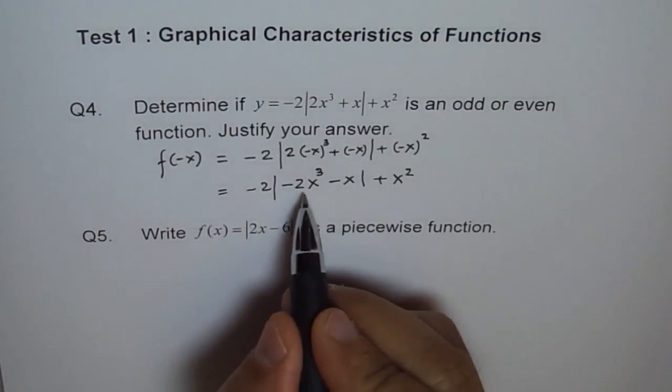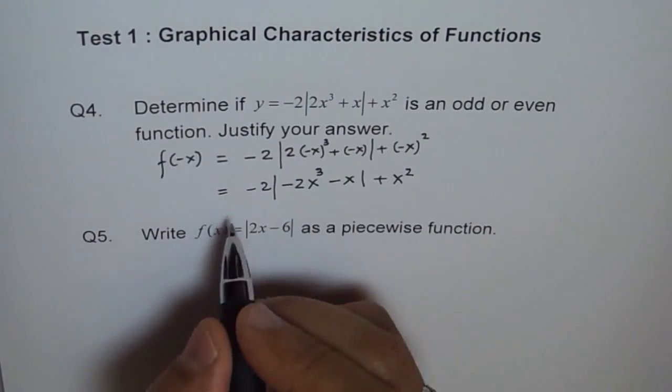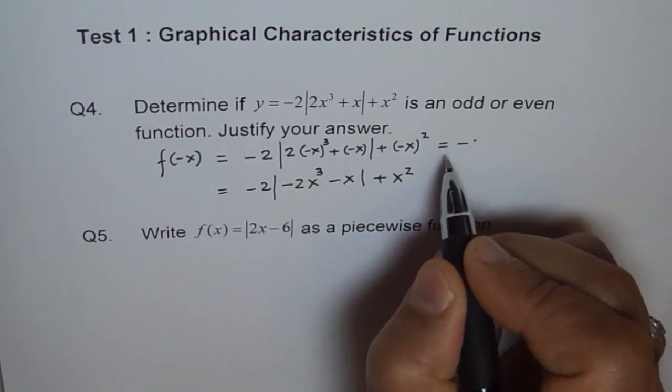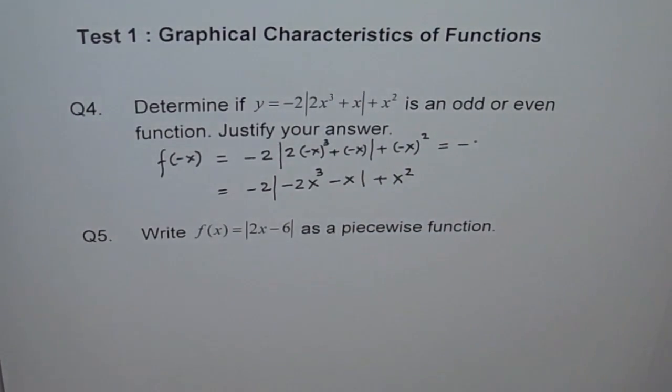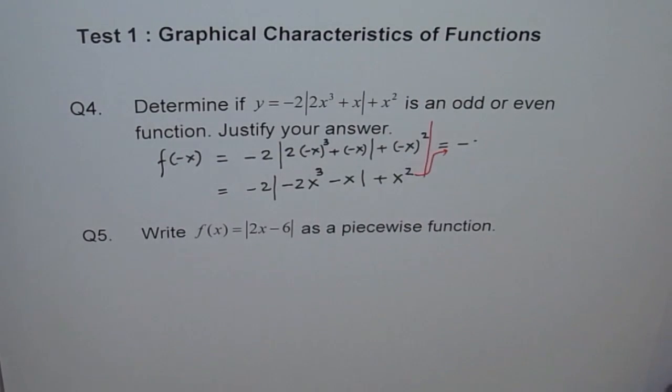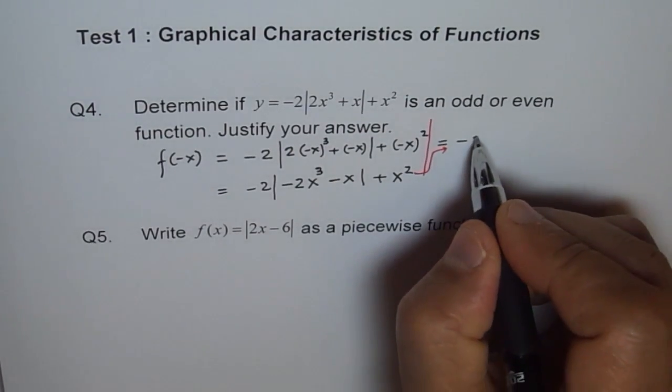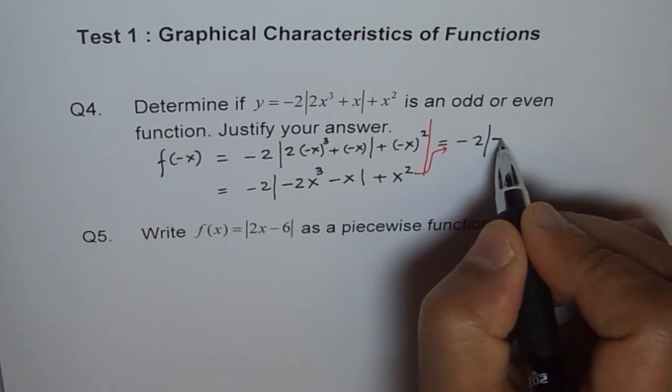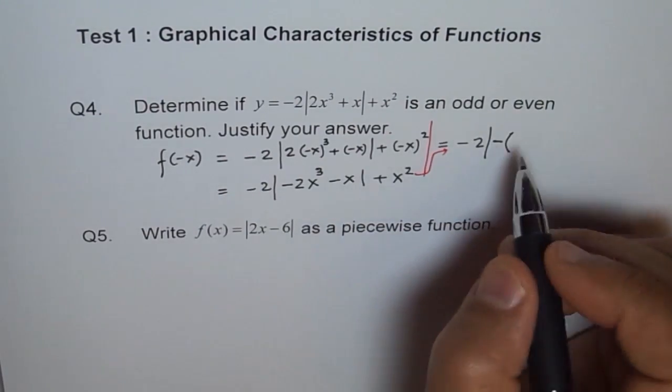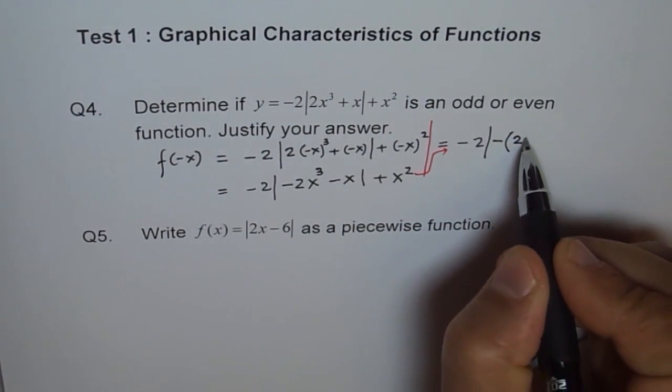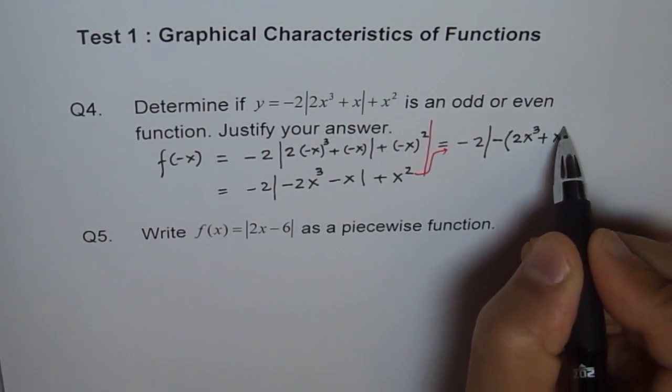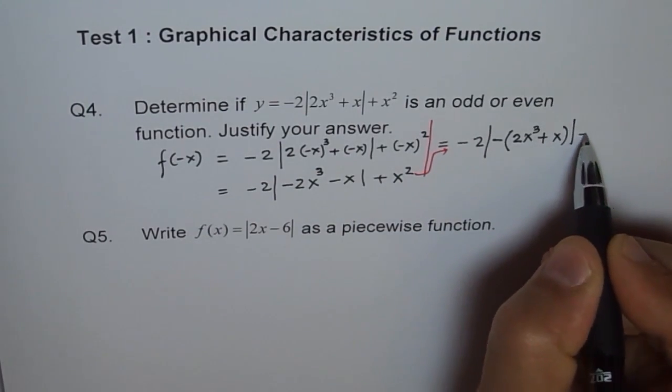Now what we can do is, we can take this minus common. If I do that, what do I get? I get -2 times the absolute value—So I am moving from here to here, okay? And I can write minus here and in the brackets, I can factor out minus from here, right? So I get 2x³ + x + x², right?